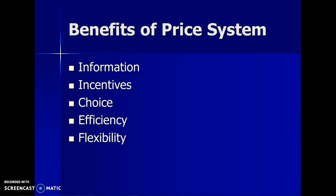The price system gives us a lot of benefits. It gives us information, so if we know how much a good costs, we can compare prices and make choices. It gives you incentives, choice, and efficiency — with $100 in your budget, each good having a price helps you use your money efficiently. It also gives you flexibility: if a good's price might go up in a couple months, you can buy it now; if it might go down, you can wait.